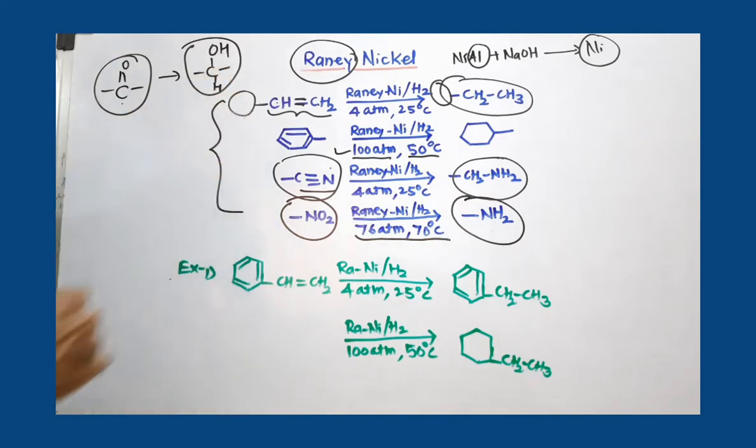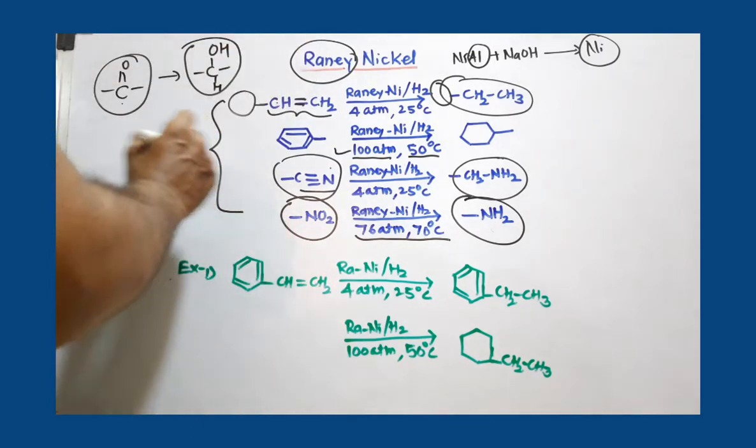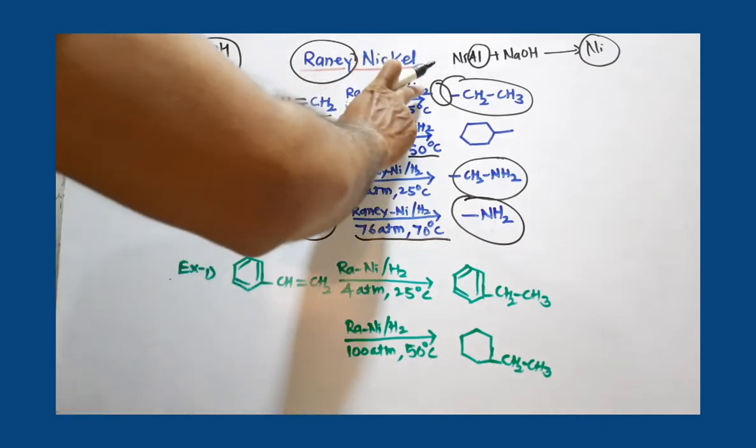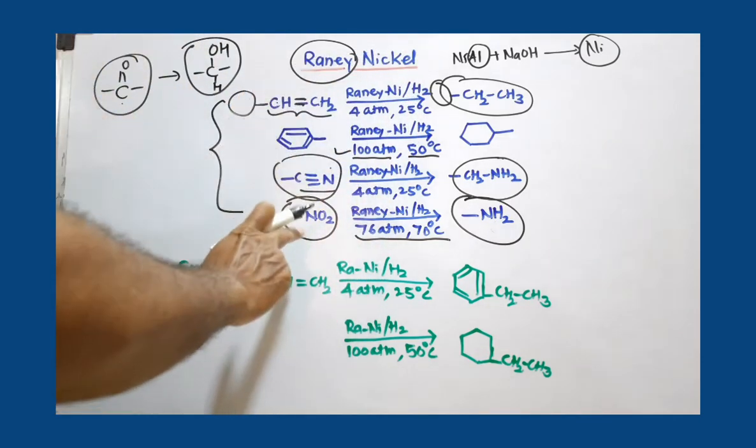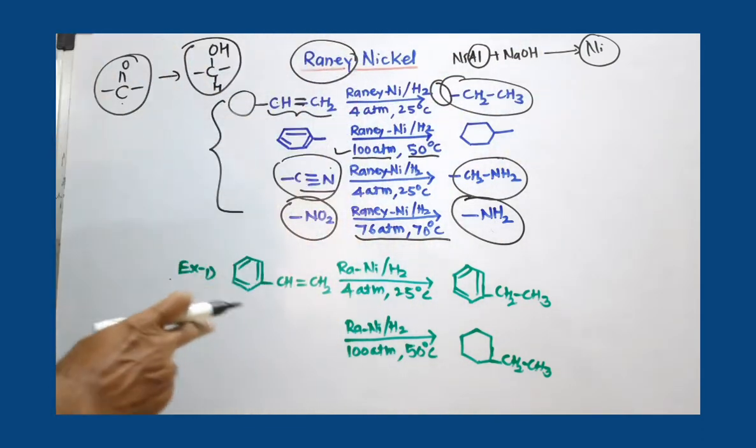This was about the general reactions by using Raney Nickel and hydrogen. These are all actually reduction reactions where we are adding H2 to the multiple bonds by using this catalyst Raney Nickel.